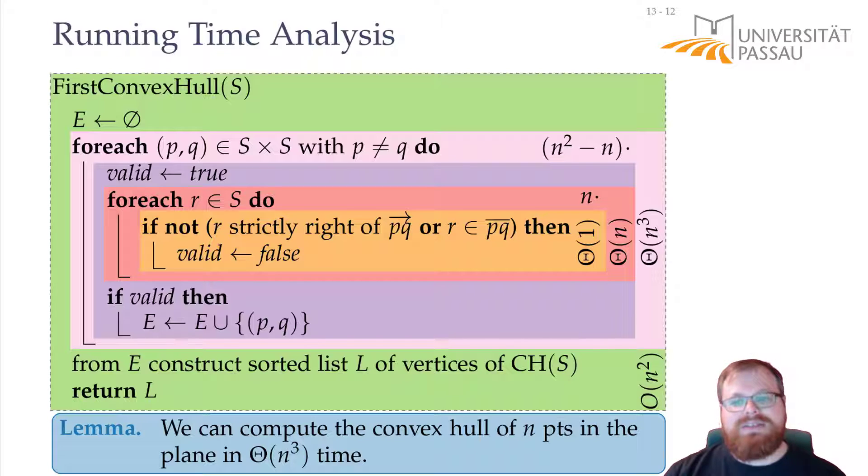This is not very fast. Usually, the runtime we are aiming for is the order of n log n. Whenever I give you a new problem and I ask you, what do you think is the time that you should spend to solve this, the answer should most of the time be order of n log n. So Θ(n³) is very far away from this.